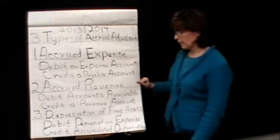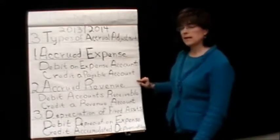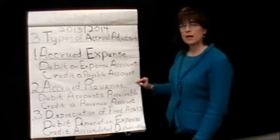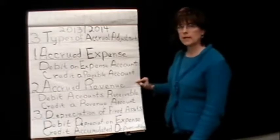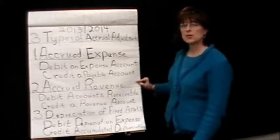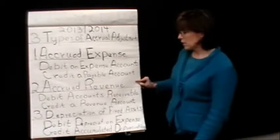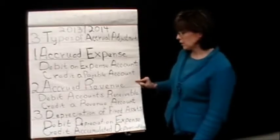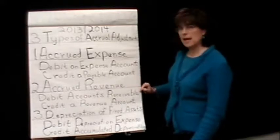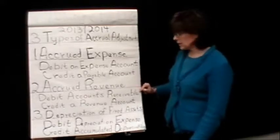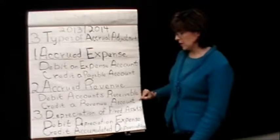Accrued revenue would be any situation where we provided a service or product to our customer that we had not collected for yet — maybe we hadn't even sent a bill out to the customer, so it's never hit our books. When we have accrued revenue, to record that we would debit accounts receivable and credit the revenue account, whatever revenue category that corresponds to.